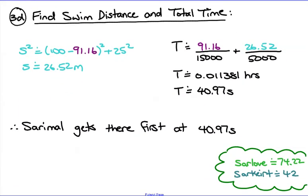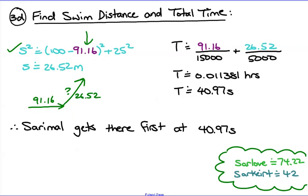Now comparing to the other two moose. Saremal runs 91.16 meters, then starts swimming. Substituting 91.16 into the Pythagorean theorem gives a swim distance of about 26.52 meters. Dividing each distance by its respective speed and converting to seconds gives a total time of 40.97 seconds — faster than both Sarlav at 74 seconds and Sarkirt at 42 seconds. Pays to know calculus.